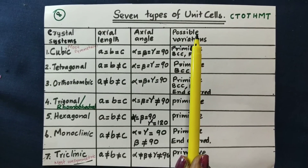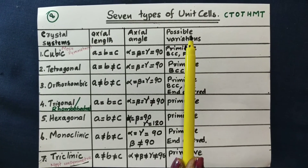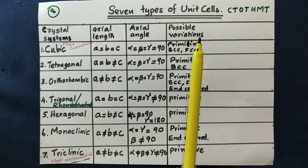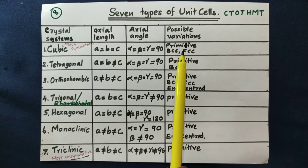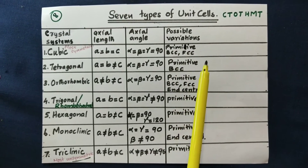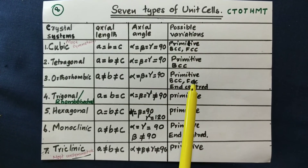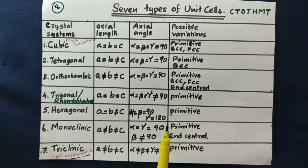There are 14 Bravais lattices — 14 types of unit cells in total.